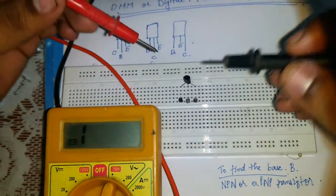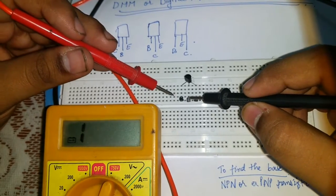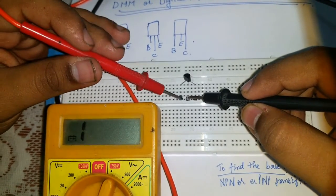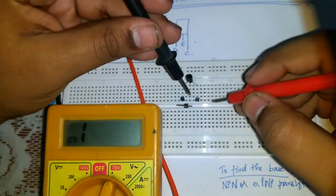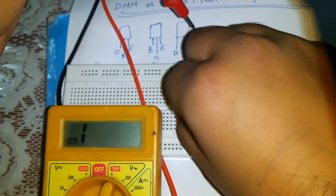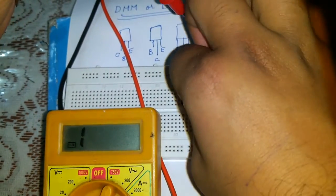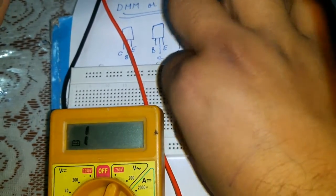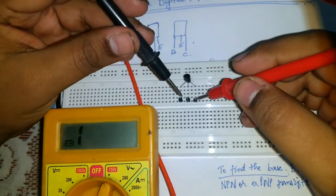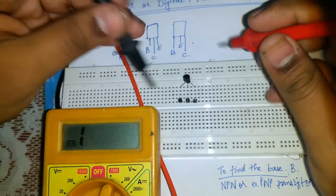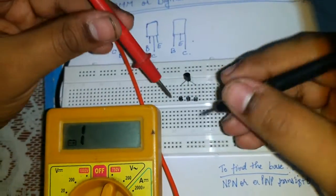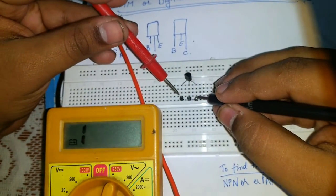Now, touching this pin again. Black pin in first pin and red pin in third pin. I am getting nothing here. That means this is infinity. I am getting nothing here. Now, let's take the second pin and we will repeat the same process. I am getting nothing.